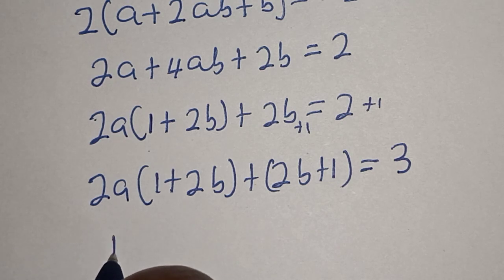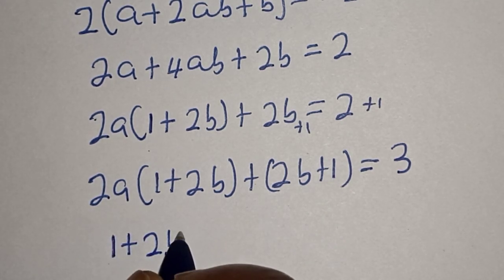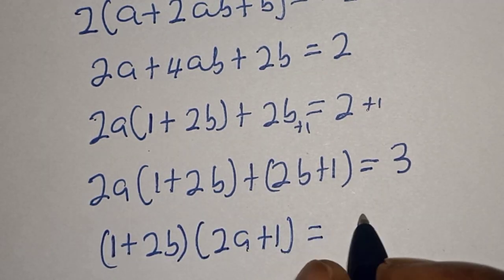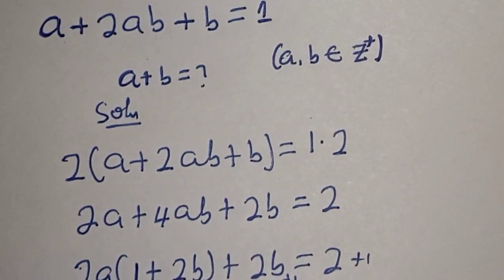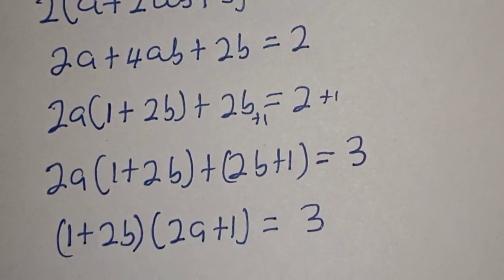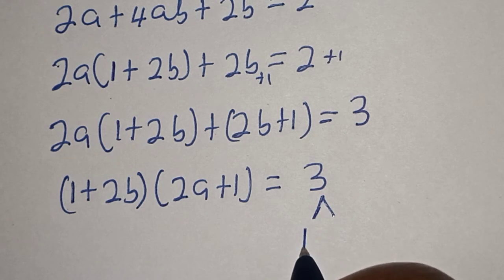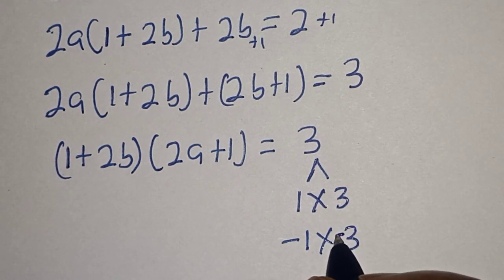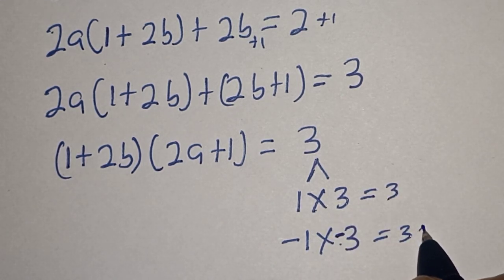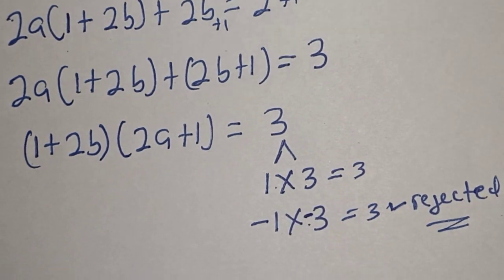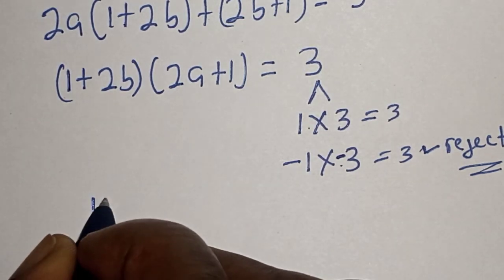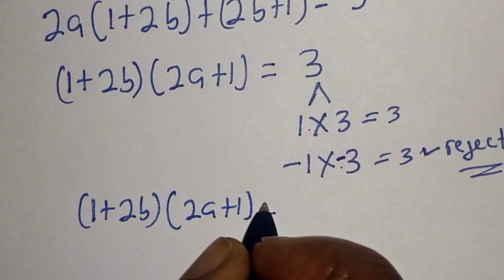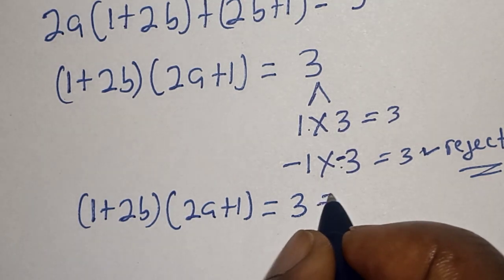Now to make the factor (1 plus 2b) appear again, we add 1 to both sides. We have 2a(1 plus 2b) plus (2b plus 1) is equal to 3. Factoring out (1 plus 2b), we get (1 plus 2b)(2a plus 1) is equal to 3.